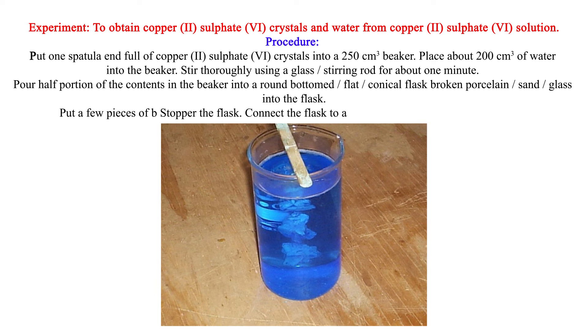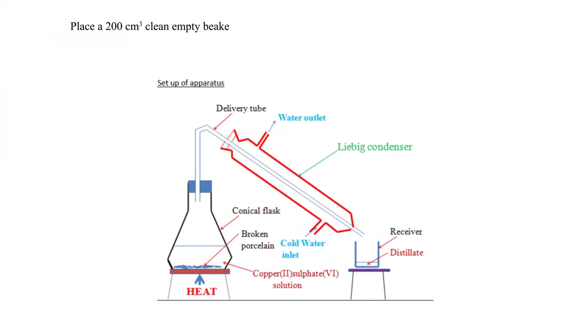Connect the flask to a Liebig condenser using delivery tube. Place a 200 cm³ clean empty beaker or conical flask as a receiver at the end of the Liebig condenser.